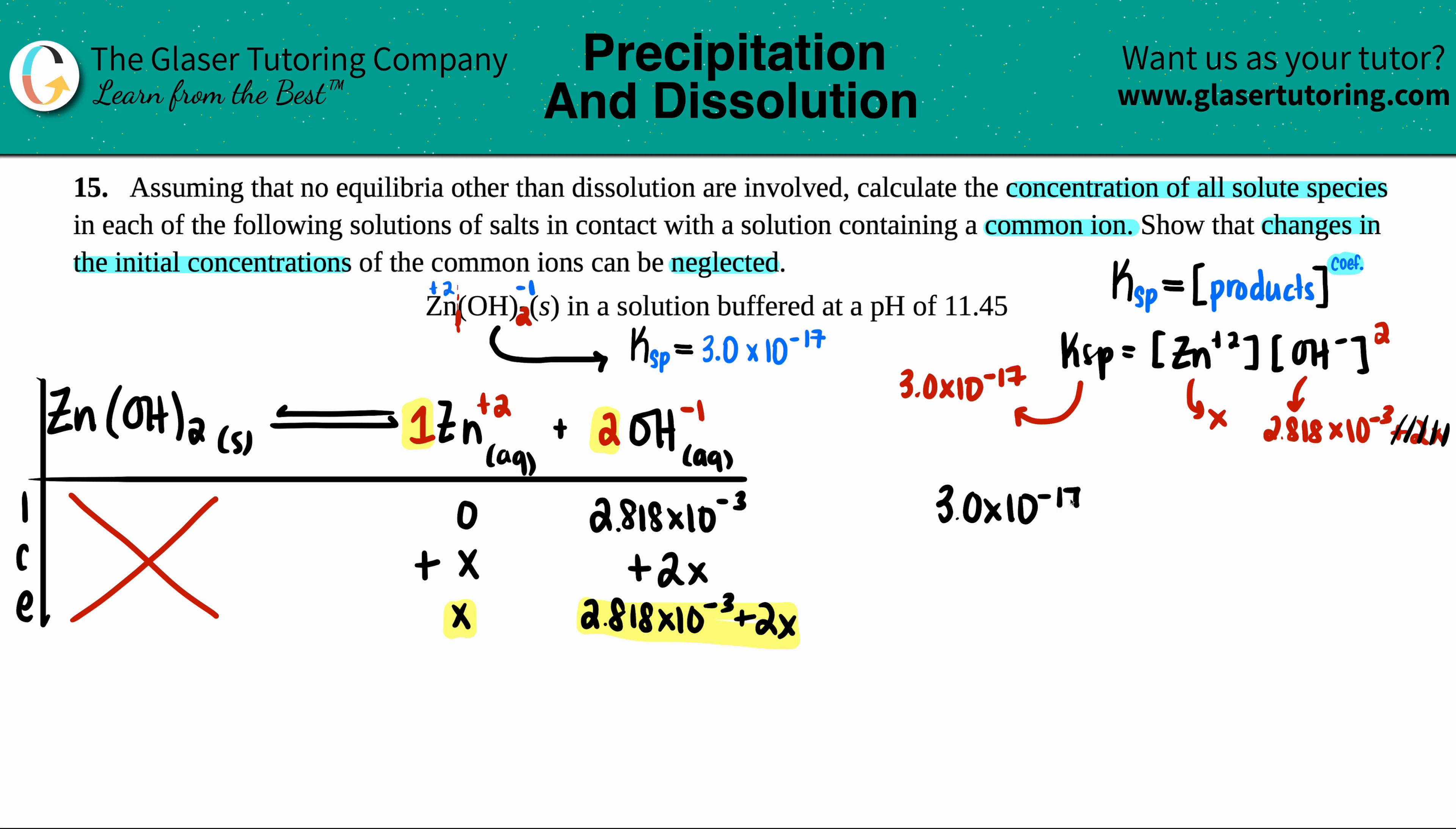But then when I go back and I actually find my equilibrium values, I do have to plug in that X for it. So we have 3.0 times 10 to the negative 17th equals this squared. This is X and this is 2.818 times 10 to the negative 3. Let's do that squared. So I get 7.9411 times 10 to the negative 6. That's times by X. And now we're just going to solve for X, divide both sides by that number.